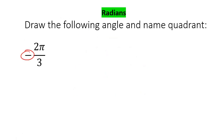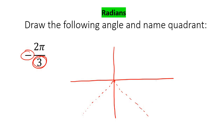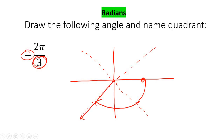Now we're going to do negative. We've done this before when looking at degrees, but now you're just going to go this way. Once again you have to break the top and bottom into three parts — you can't use the x-axis as one of the parts. So it would be something like there and there. The only one has to go two out of three: so one, two. So we're in this quadrant here, draw a line, and that's what that one would look like.